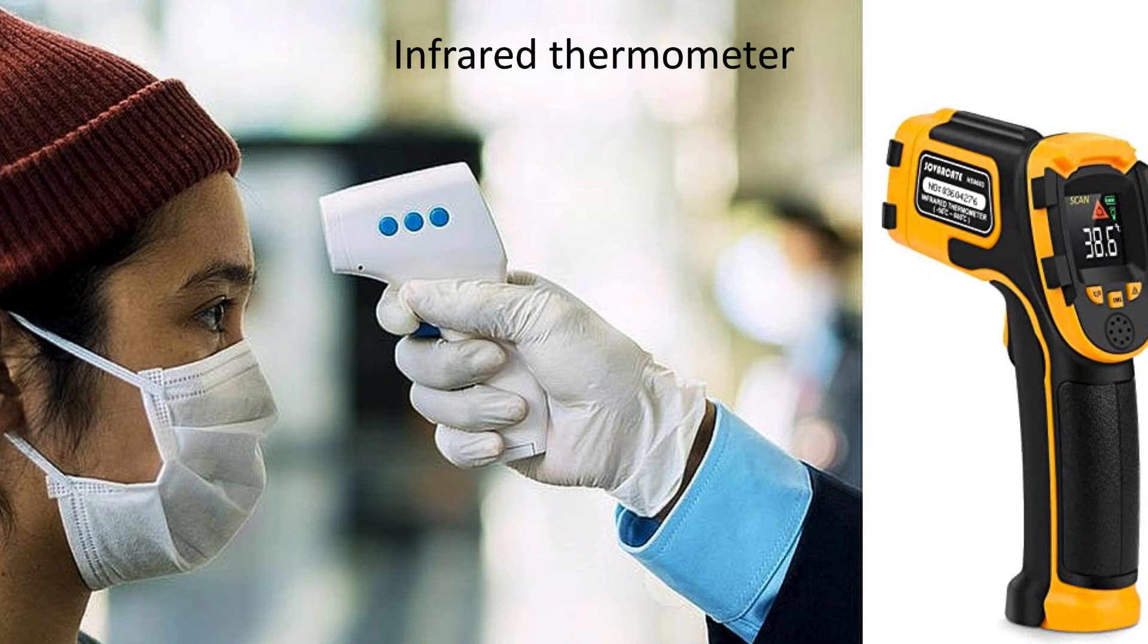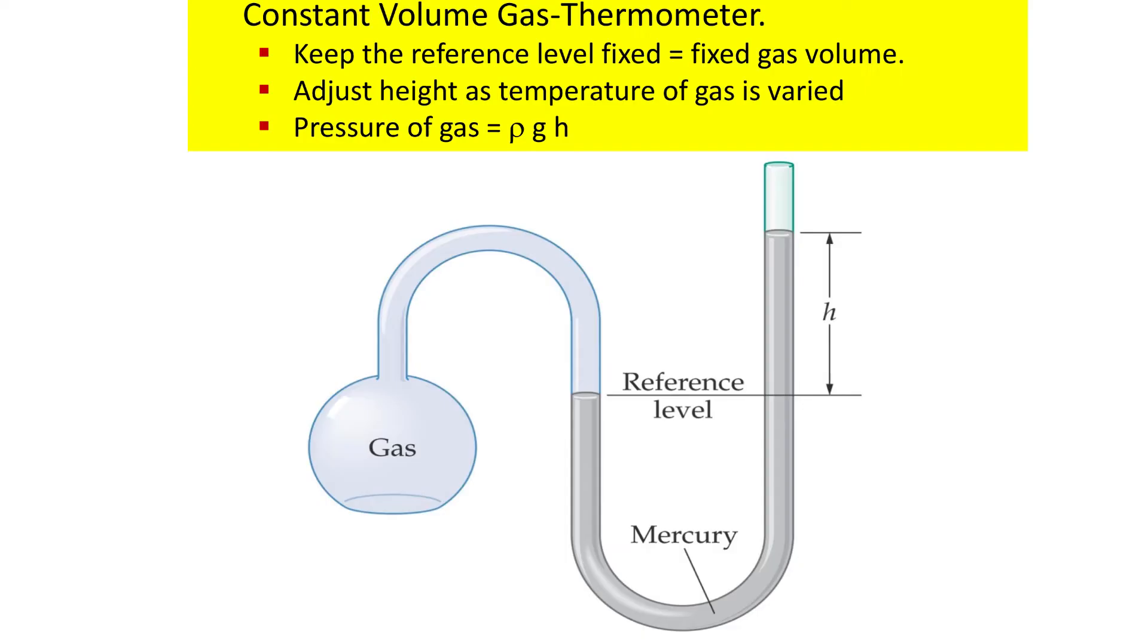One of the oldest kinds of thermometers was the constant volume gas thermometer. There's gas in this kept at a fixed volume because there's a reference level that's constant. There's a column of liquid of height h. As one heats up this gas, the pressure increases, pushing out the gas. The pressure here and here have to be equal. How much is the pressure? It's the density of the liquid times the acceleration due to gravity times height h. As you heat up the gas, this height increases.